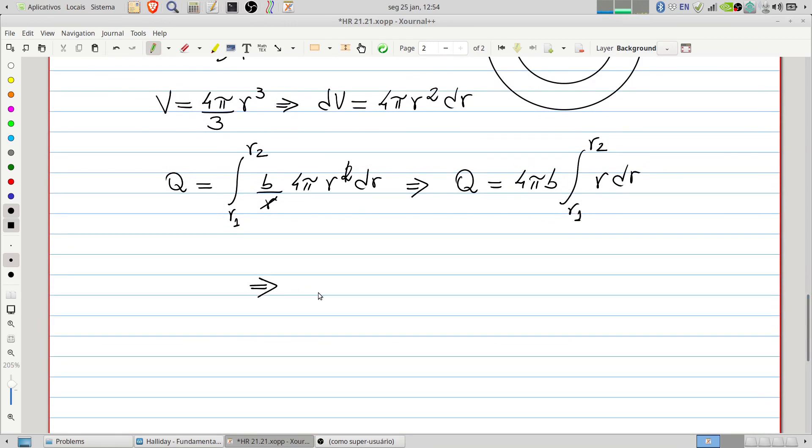Therefore, the charge will be 4 times π times b, r, integrated here, we will have r squared, so r squared, the outer radius squared minus the inner radius squared, r divided by 2.